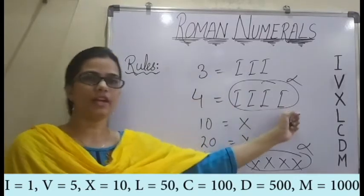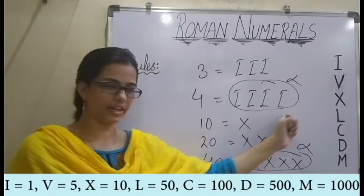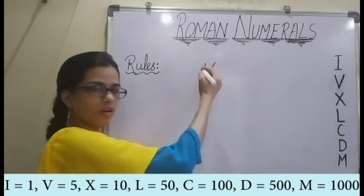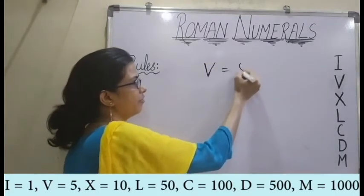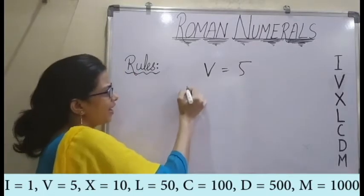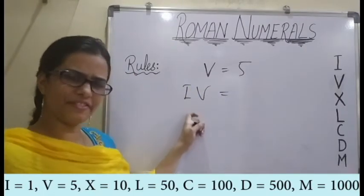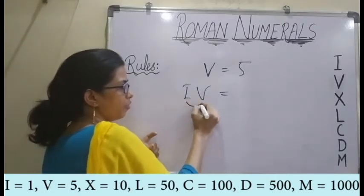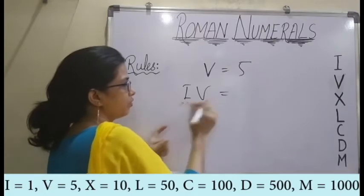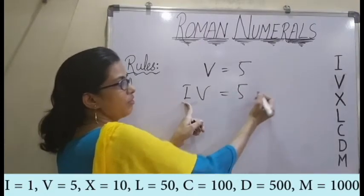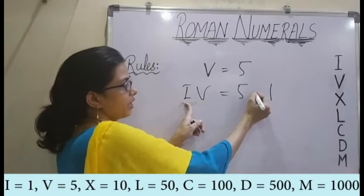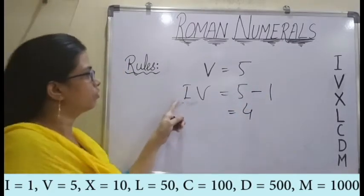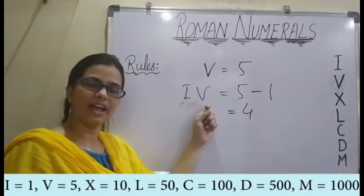If for V I have 5, and I write I before V, what does this stand for? This actually means I am subtracting the value of I from V. Value of V is 5, and value of I is 1. So 5 minus 1 equals 4. So for 4, we write IV.